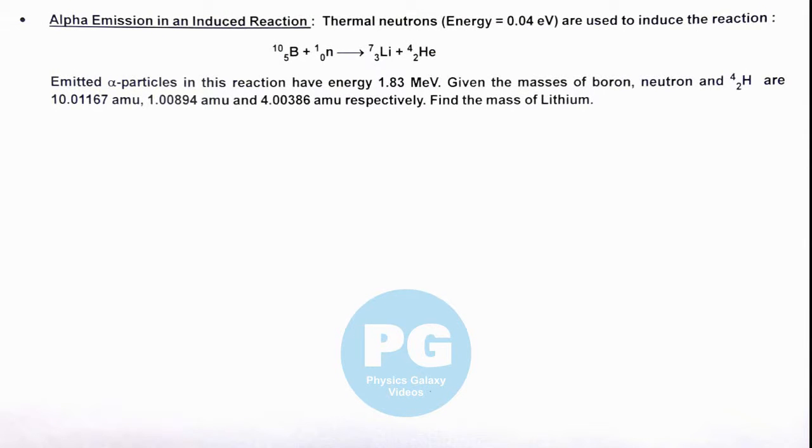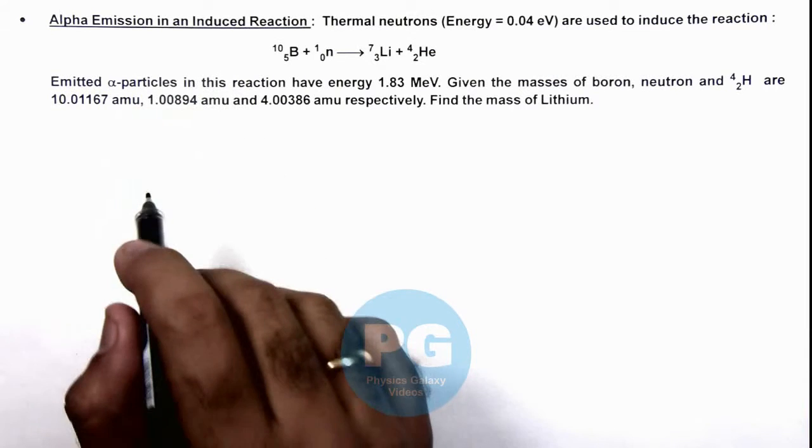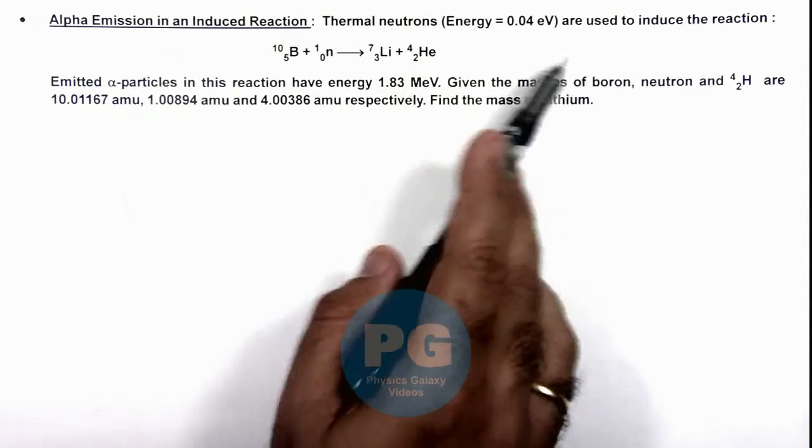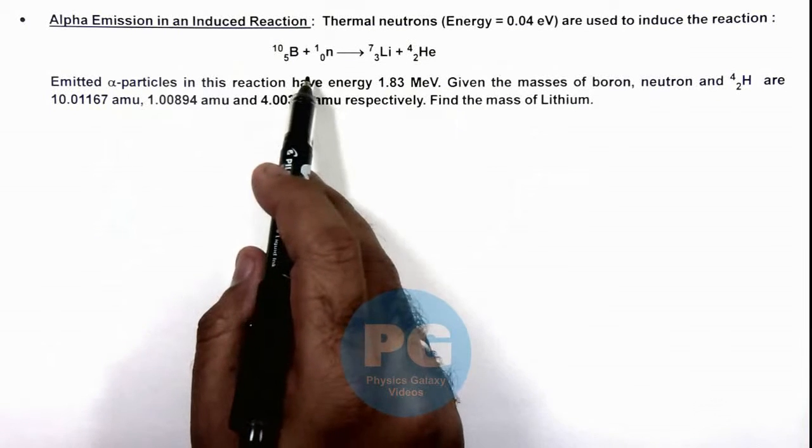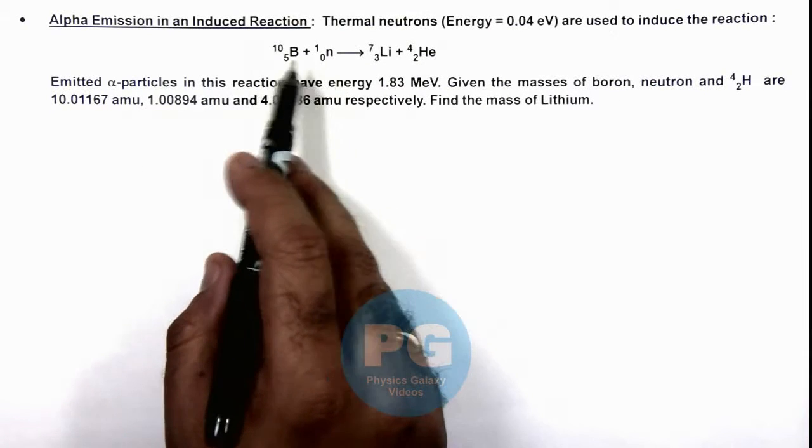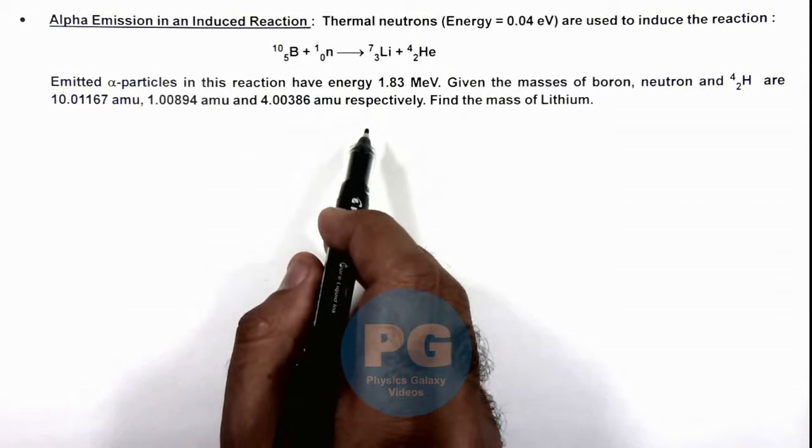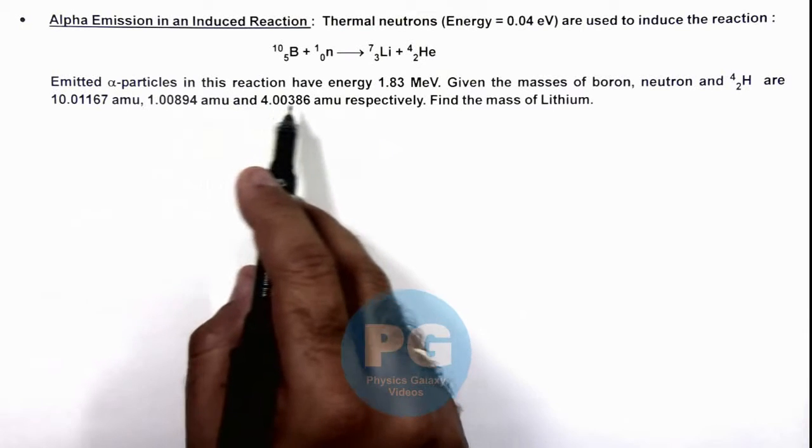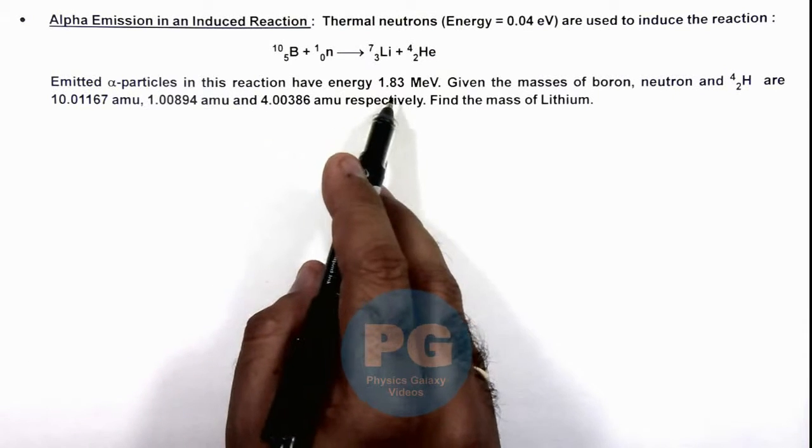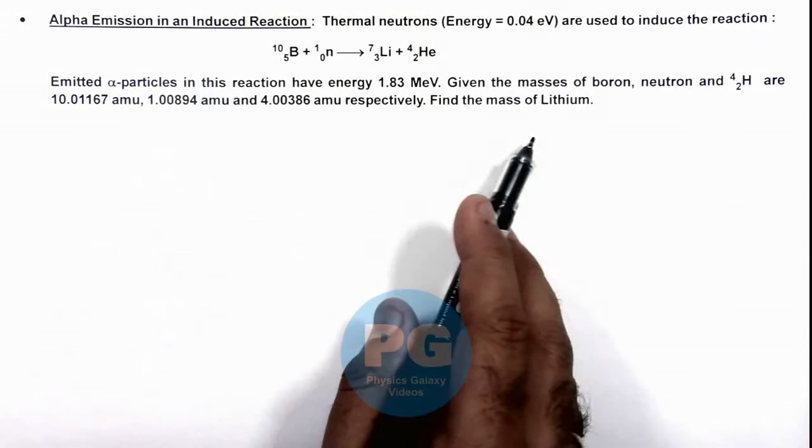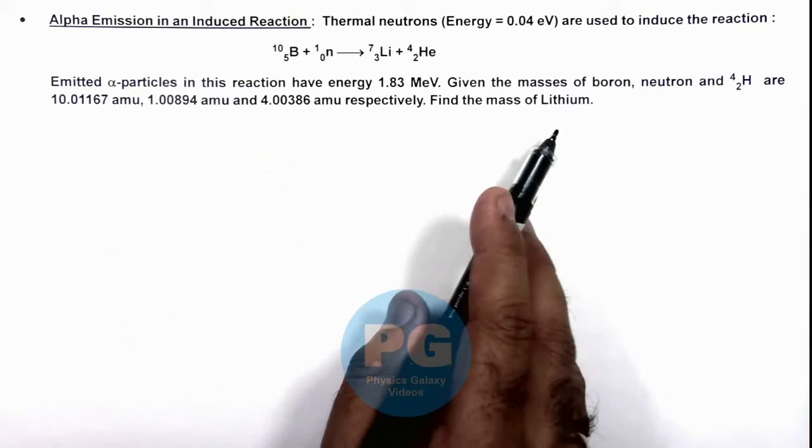This illustration is about alpha emission in an induced reaction. Here we are given that thermal neutrons are used to induce the reaction where neutrons falling on boron produce lithium and an alpha particle. Here we are given that emitted alpha particles in this reaction have energy 1.83 MeV and masses of all particles are given. We are required to find the mass of lithium.